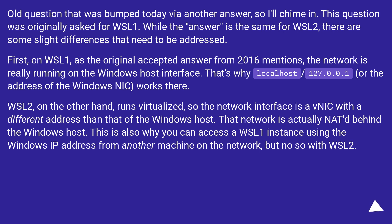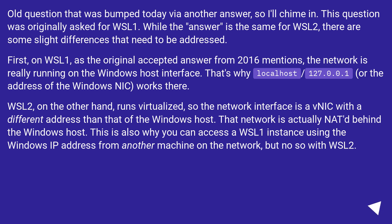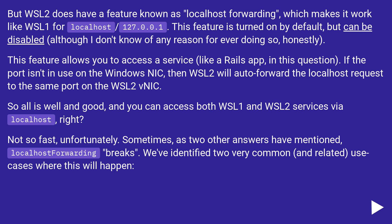WSL 2, on the other hand, runs virtualized, so the network interface is a NIC with a different address than that of the Windows host. That network is actually NATed behind the Windows host. This is also why you can access a WSL 1 instance using the Windows IP address from another machine on the network, but not so with WSL 2.